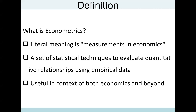The first question — let's start by defining what econometrics is. Literally speaking, econometrics refers to the measurements in economics. Just as indicated yesterday, most of the variables that you look at are qualitative in nature, and it is very difficult to examine the relationship among qualitative variables.